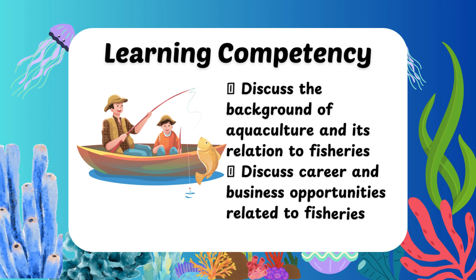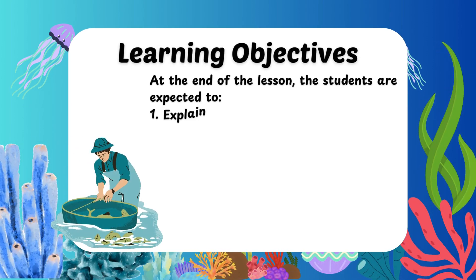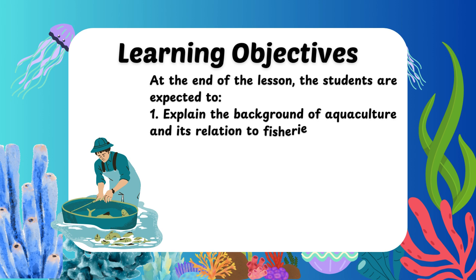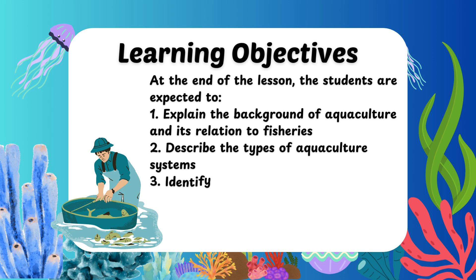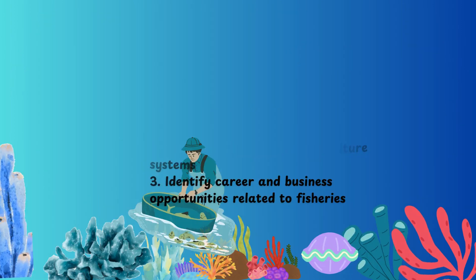Discuss career and business opportunities related to fisheries. Learning Objectives: At the end of the lesson, the students are expected to: 1. Explain the background of aquaculture and its relation to fisheries. 2. Describe the types of aquaculture systems. 3. Identify career and business opportunities related to fisheries.